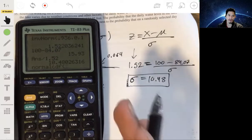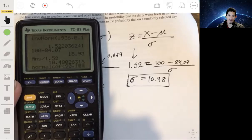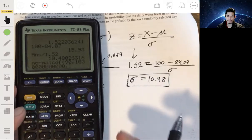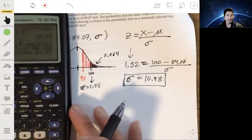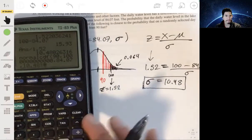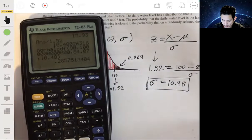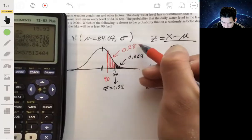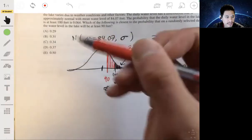Here we're going to enter the lower bound, which will be 90. Comma, the upper bound, very big number. Comma, the mean, 84.07. Comma, followed by the standard deviation. And then we get about 0.2875. This whole area is about 0.2875. And so then our answer would be 0.28.